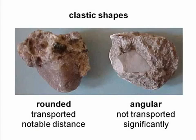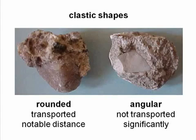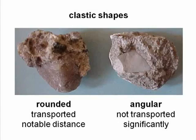The shape of clastic particles indicates the distance that the fragments were transported before being incorporated into the sediment that was lithified to become the rock. Rounded fragments underwent considerable erosion that wears away and removes sharp edges, so rounding shows these fragments were transported a notable distance. Angular fragments have not been subjected to this erosion process, so they have not been transported a significant distance. Rock fragments range across a full spectrum from angular to round.